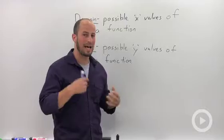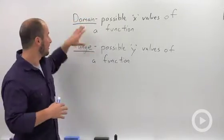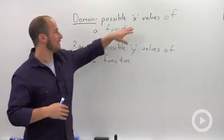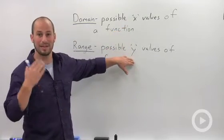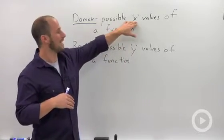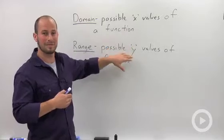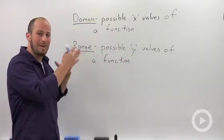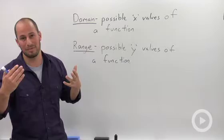The easiest way I have to remember this is they actually come alphabetically: d comes before r, x comes before y. So when you're thinking about domain, x comes first. Think about range, y comes second. There's that alphabetical representation that helps me remember it.